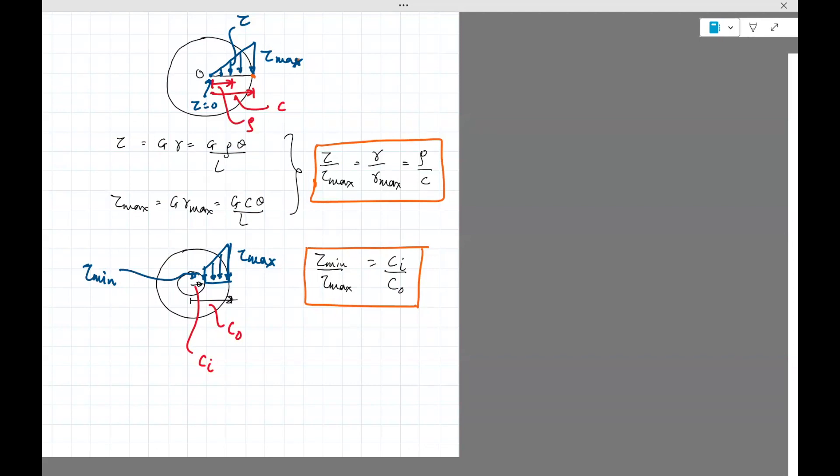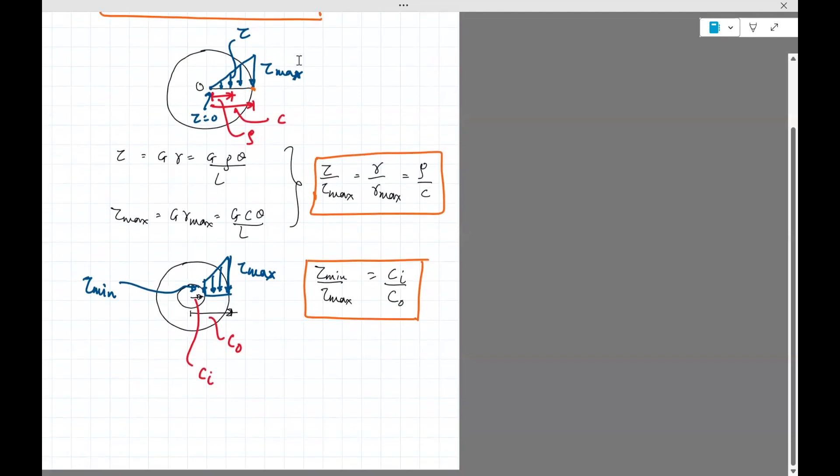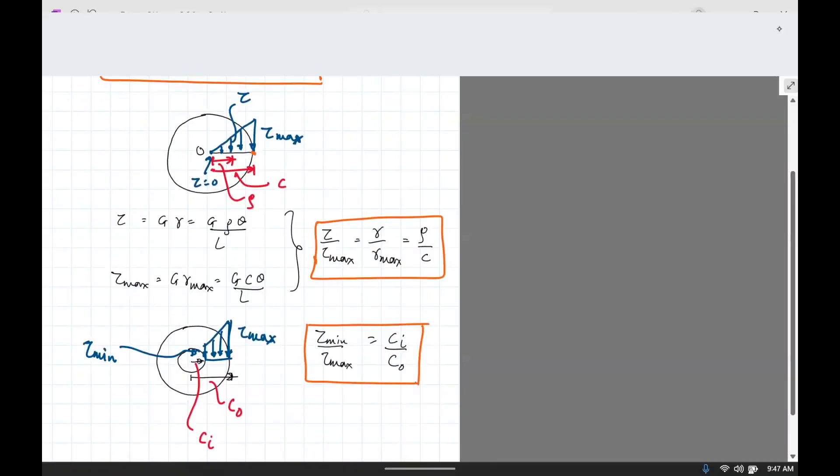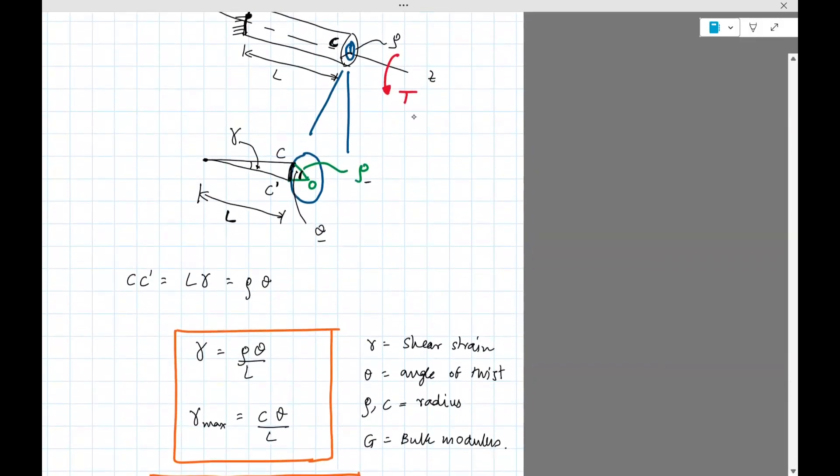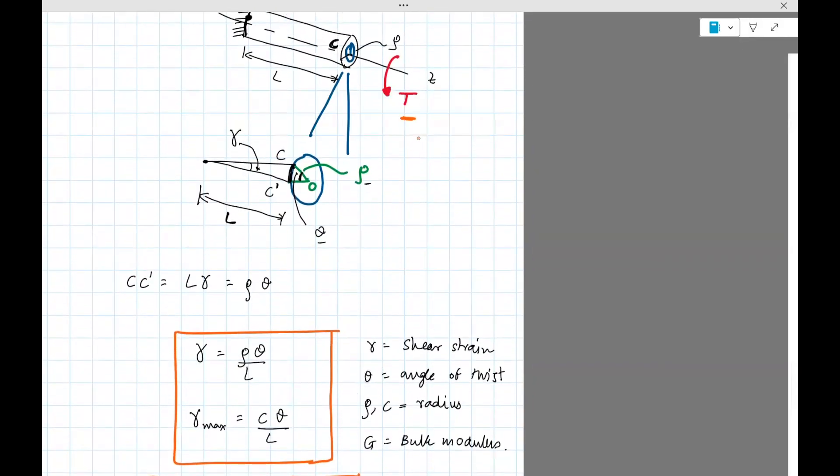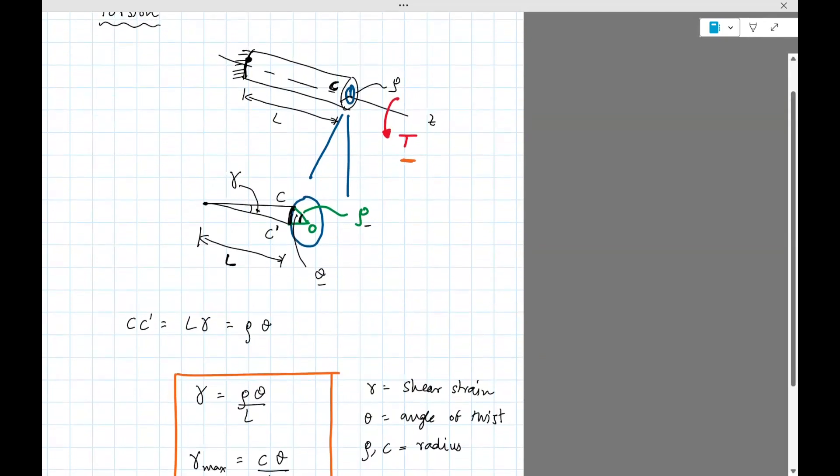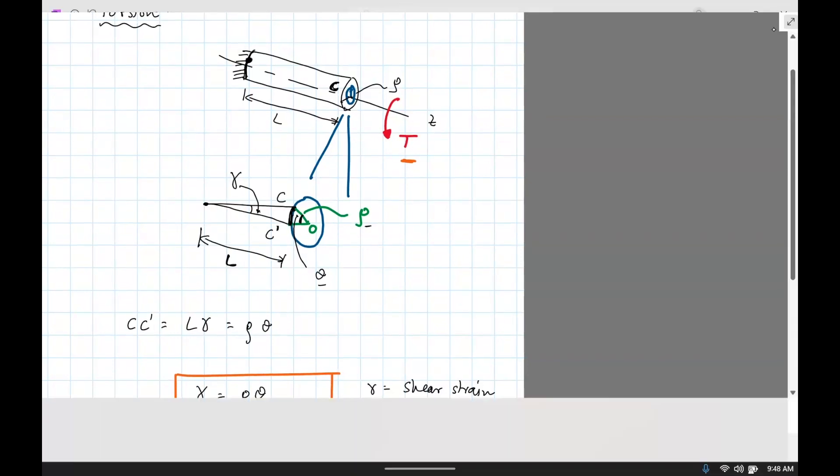Now we've computed the shear stress. We've computed the shear strain in terms of angle of twist. But what we really want to do is we want to somehow be able to relate the torque to the shear stress or angle of twist and so on. Because what really causes this torsion to happen is the torque T. So I'm going to derive an expression for torque T as a function of what we have so far.